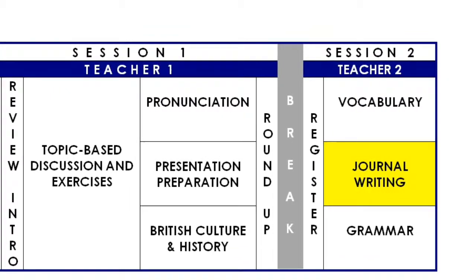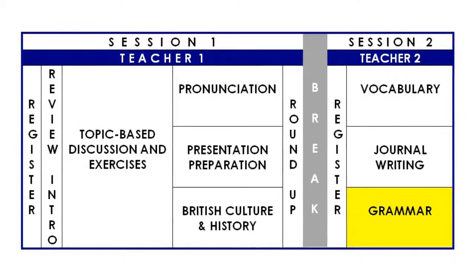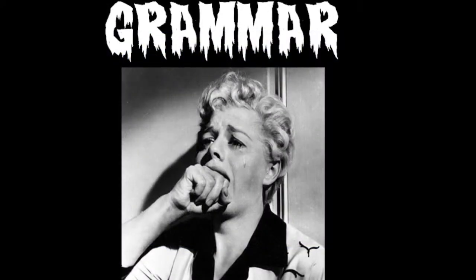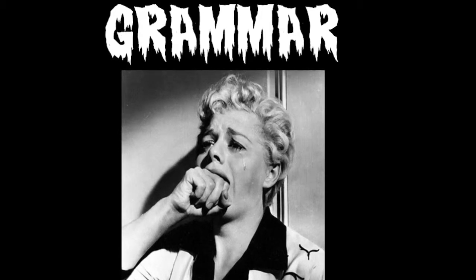The last slot on the timetable is grammar. You might think this is a bit strange after the case I made for avoiding grammar, but like the topics, it's connected to the Trinity College graded exam syllabus. Although the Trinity exams are mainly focused on oral skills, there's a list of grammar items for each grade which students are expected to be able to use appropriately. As with all the material in Everyday English, it's up to the teacher to decide if this will benefit the students, and either use it or replace it with something else.